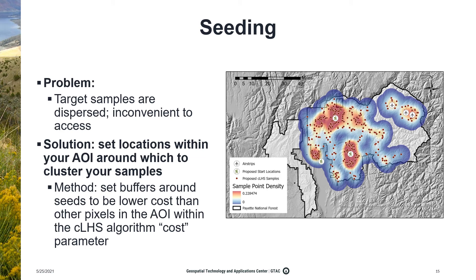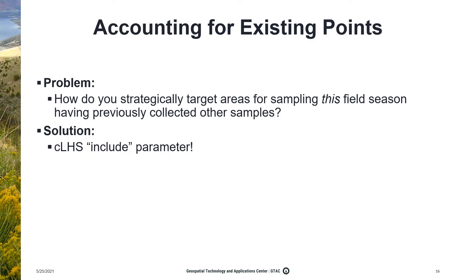The first technique I'll discuss is seeding, which is super simple and can help cluster your sample points to make them easier to visit. For the Payette, Brian Gardner, who is helping lead this work, knew where he'd start field visits from, so I could place seeds there and encourage denser sampling around these seeds. This is implemented through the cost parameter within CLHS — you assign much lower cost values to areas within some buffer distance of the seed. This figure shows a heat map of sample point density, where the redder or denser areas are around the seeds we set. Additionally, we wanted to add points to an existing dataset, which you can do within the CLHS algorithm using an include parameter. It pre-selects certain points within your data space and continues sampling while accounting for the information you've already gathered, statistically building on the existing dataset.